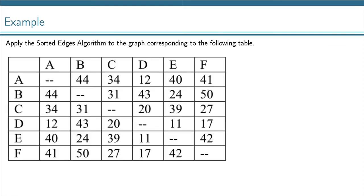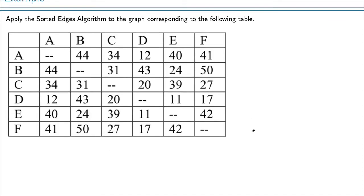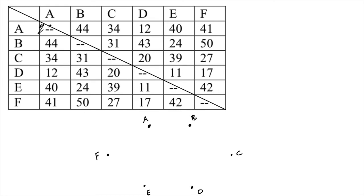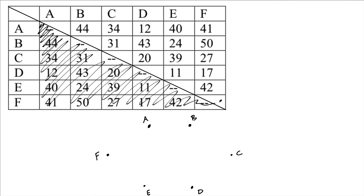Let's do another one with six vertices A through F. Draw them circularly so it's easy to connect them. We only need half of the table. The smallest number is 11 from D to E, so draw that connection. The next smallest is 12 from A to D. Now the next smallest looks like 17 from D to F, but notice that gives D a vertex degree of 3 — I can't have three edges coming off of that, so I'm not allowed to do that. I'll cross it off.